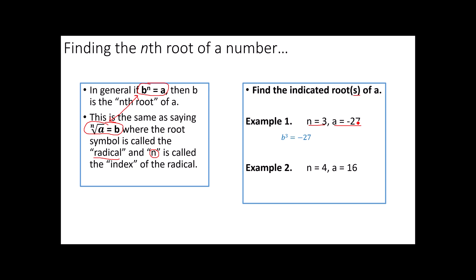So that if I said to you, find the indicated root or roots of a, and I said it has an index of 3 and a is a negative 27. This question is asking you, what cubed equals negative 27 or the cubic root of negative 27 is what? Either way, it's a negative 3. Negative 3 times negative 3 is positive 9 times negative 3 is negative 27. How about example 2? The index is 4. The number is 16. That means what to the 4th power is a 16? Notice I put the positive and negative signs in here. That's because this is going to have two answers.